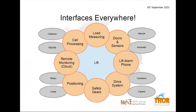If you look at the lift, we have interfaces literally everywhere: call processing, load measuring of the car, doors and their sensors, the lift alarm phone, the drive, safety gears, and positioning. All those components are usually available in different variants — for positioning, some kind of rotary or linear encoder, and for doors, a very large variety of different door systems. In other words, we have interfaces everywhere and needed a solution that was covering them all.